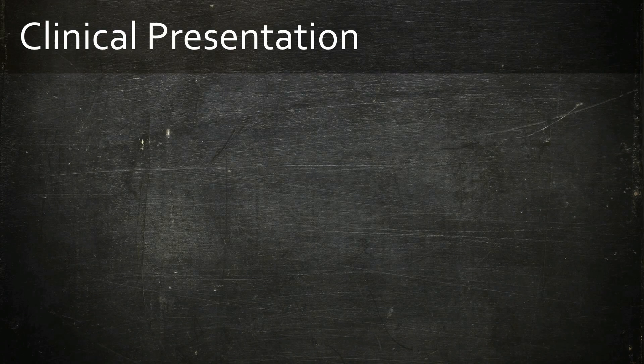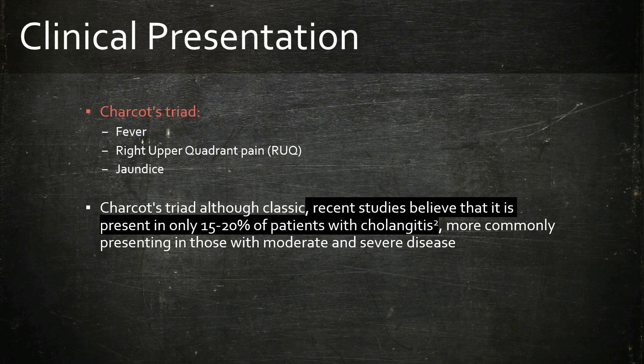Classically, a patient with acute cholangitis presents with Charcot's triad, which includes fever, right upper quadrant pain, and jaundice. However, in recent studies it is believed that only 15–20% of patients with cholangitis present with Charcot's triad, more commonly presenting in those with moderate to severe disease. Severe disease, in addition to Charcot's triad, may also have hypotension and confusion, deemed Reynolds' pentad.